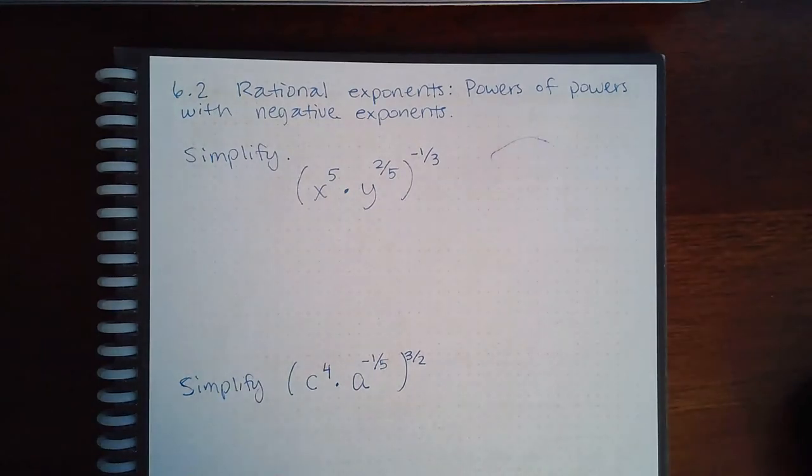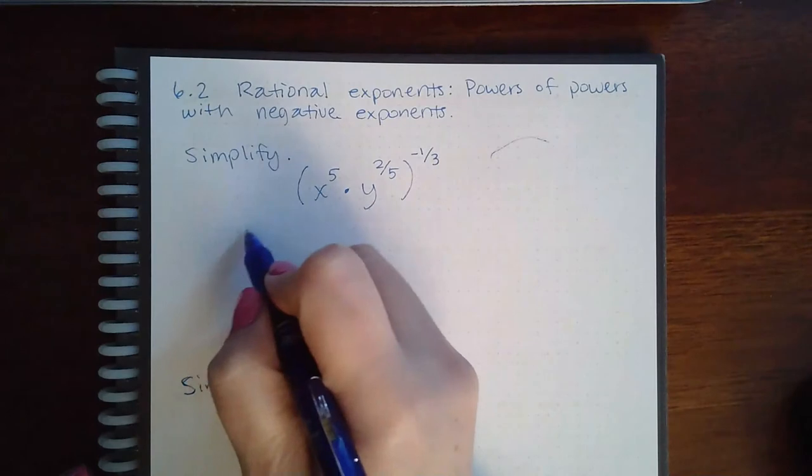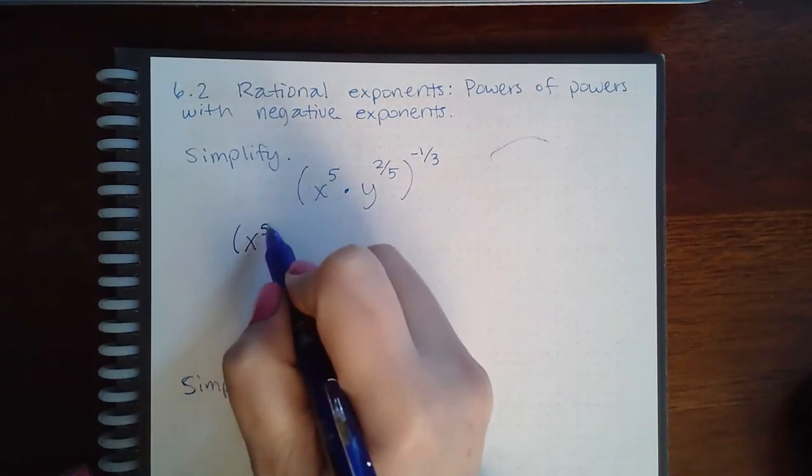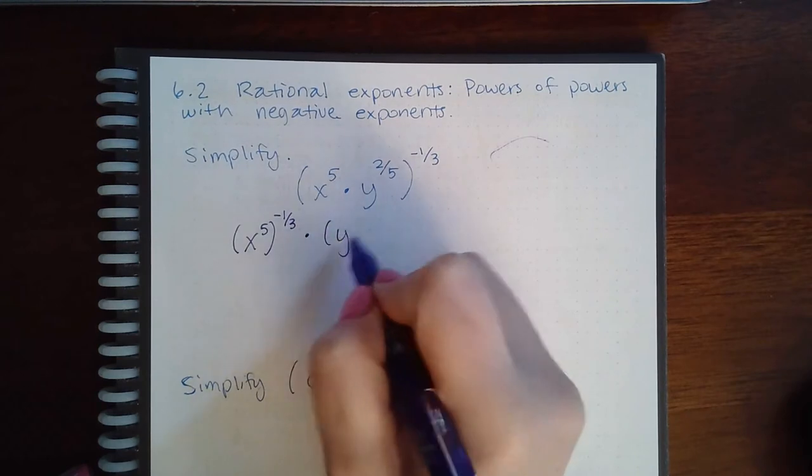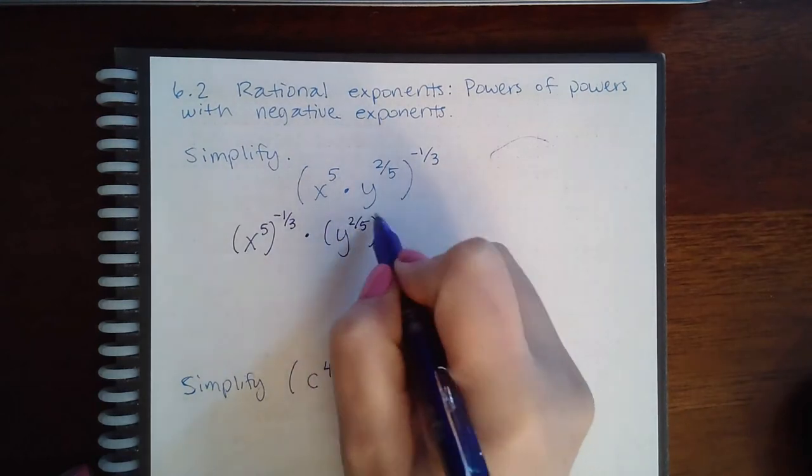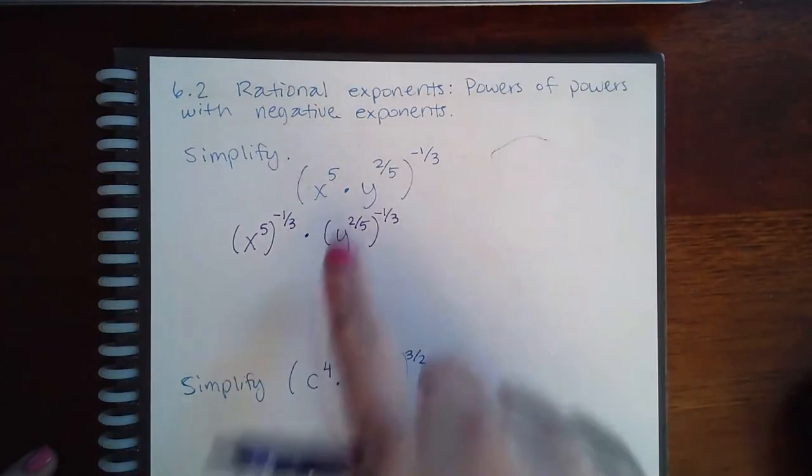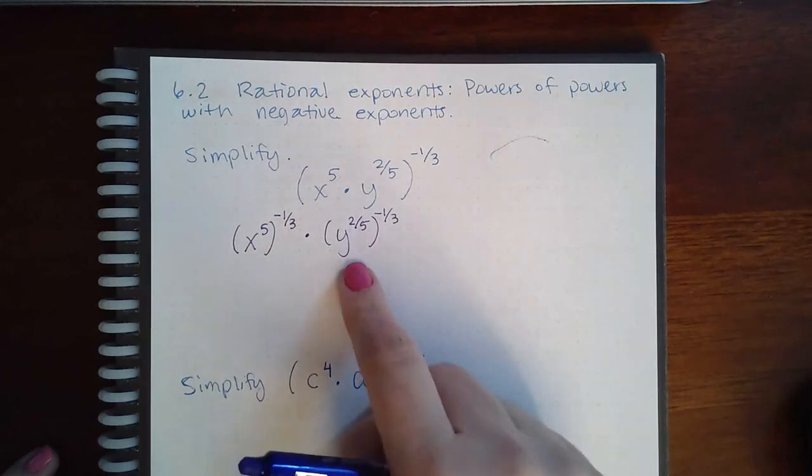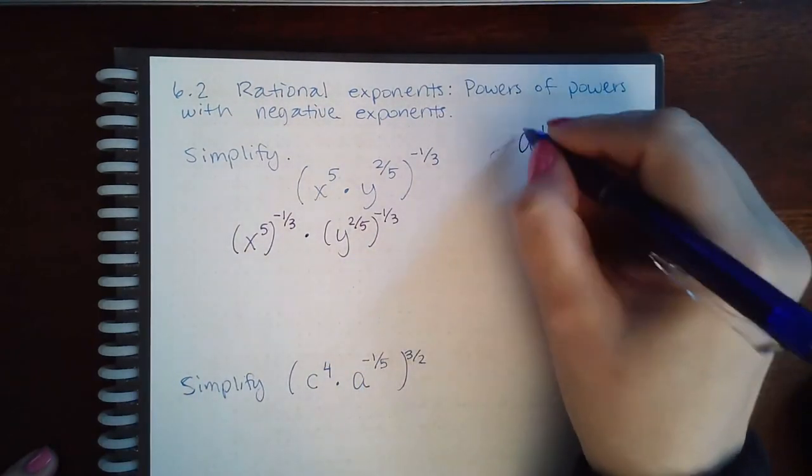So here we have 6.2 rational exponents: powers of powers with negative exponents. We do need to give that power to both factors. Both of those factors will get this exponent - they're not terms. If there was a plus in here I would not be allowed to do this at all because the rule only applies to multiplication.